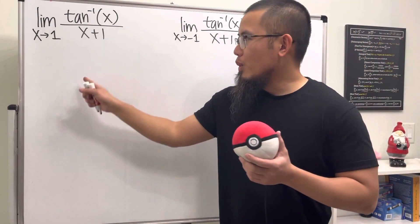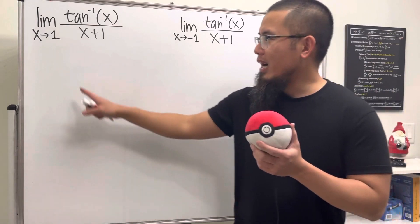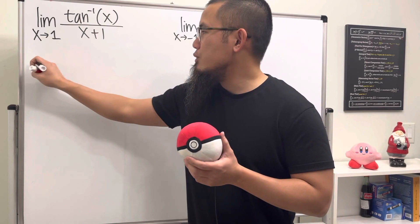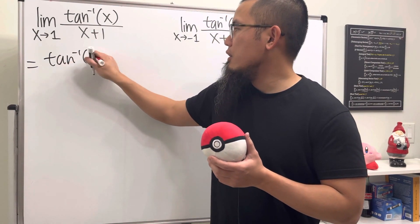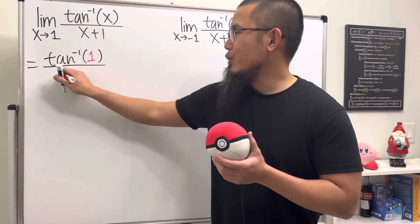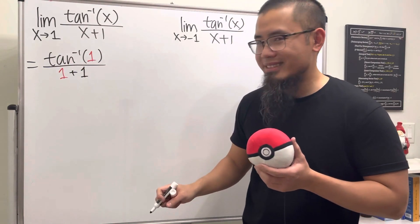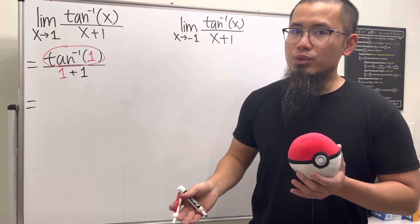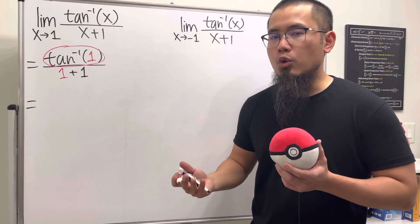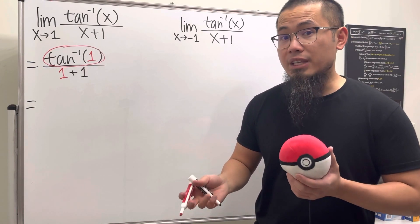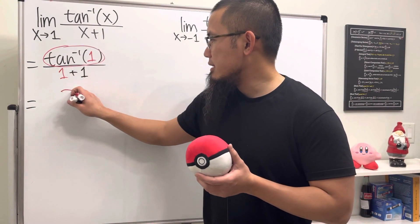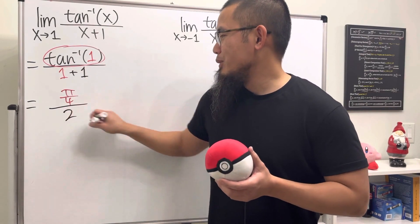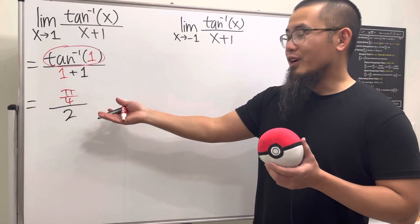This first one is the easy one — let's do that first. We can just plug in one for x and see what happens. We get inverse tangent of one over one plus one. Inverse tangent of one: you ask yourself, tangent of what angle gives you one? The answer is π/4. So the numerator is π/4 and the denominator is two.